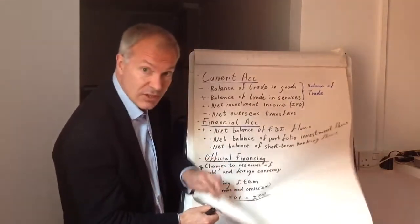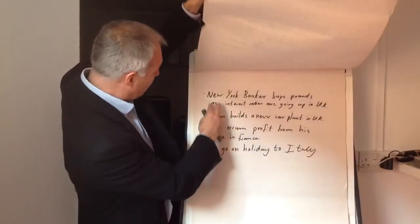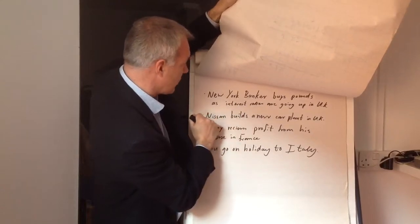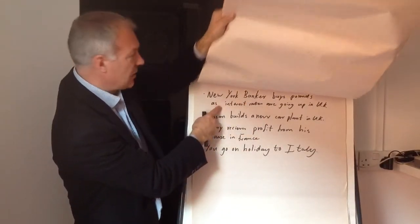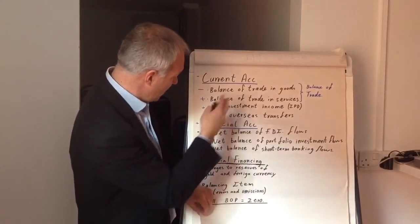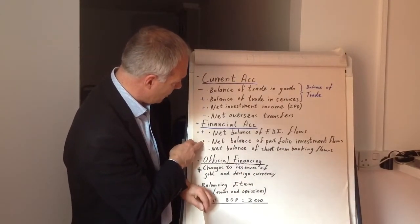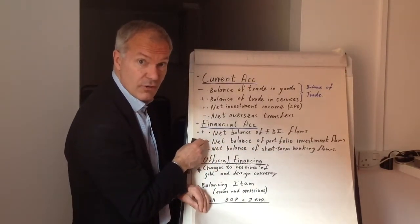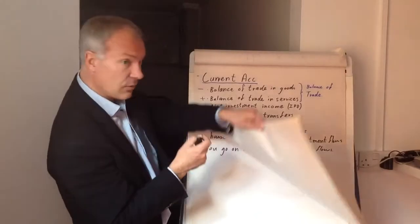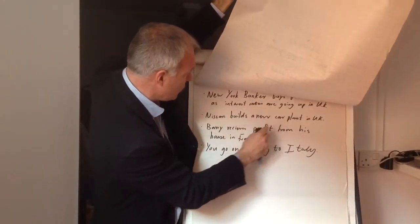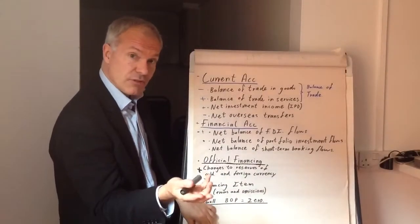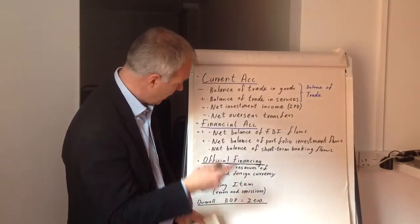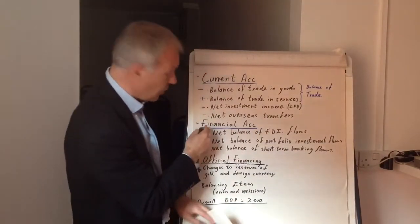Just a quick test now. Number one: a New York banker buys pounds as interest rates are expected to go up in the UK. Well, that would be under the financial account, the net balance of portfolio investment flows, and it would be a positive flow into the UK. Number two: Nissan builds a new car plant in the UK. That would be a positive credit, because they're buying pounds in order to build a car plant in the UK, and that would be net balance of FDI — a positive.